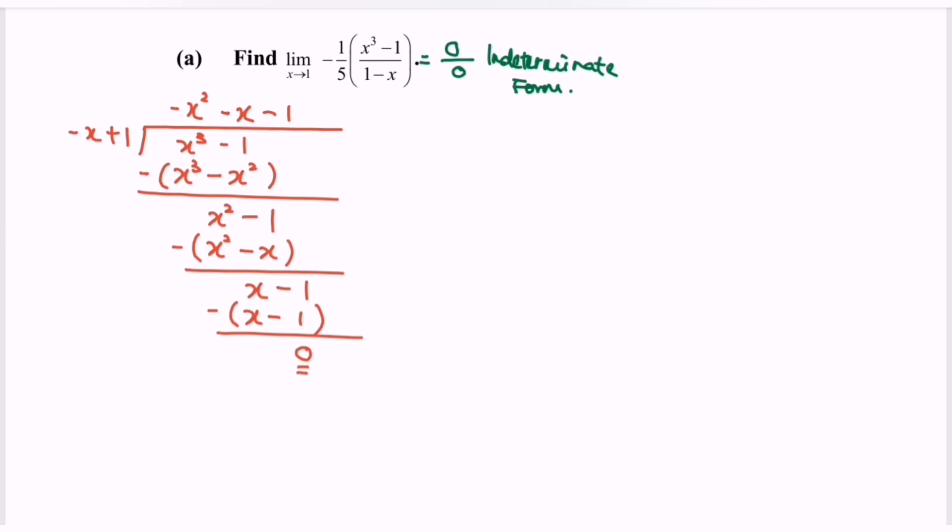Rewrite the situation. Limit when x approaching 1 for the function, negative 1 over 5, multiply with negative x squared minus x minus 1, multiply with 1 minus x over 1 minus x. If you notice there are common terms, we can simplify.